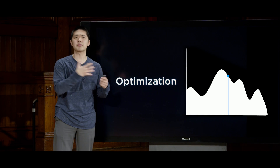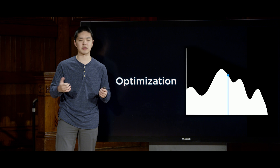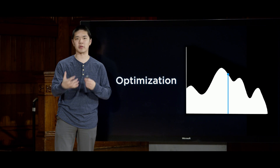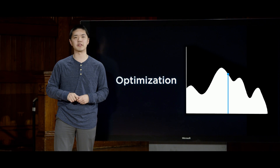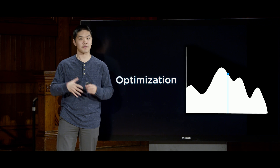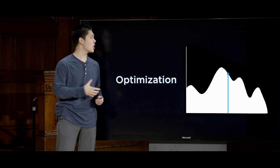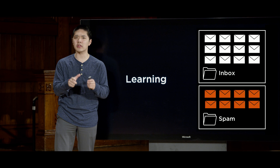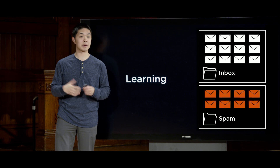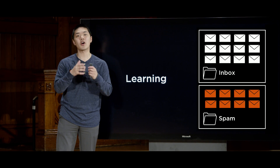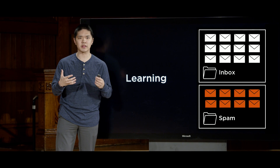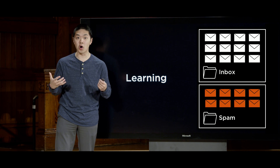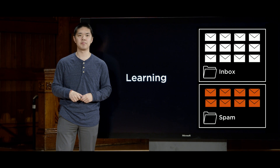We'll explore how AI can solve various types of optimization problems, trying to maximize profits or minimize costs or satisfy some other constraints, before turning our attention to the fast-growing field of machine learning, where we won't tell our AI exactly how to solve a problem, but instead give our AI access to data and experiences so that our AI can learn on its own how to perform these tasks.